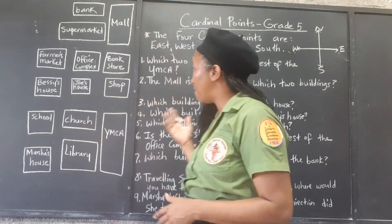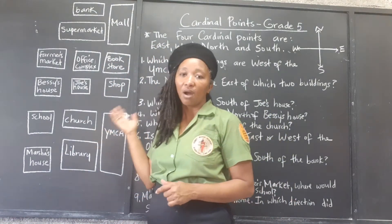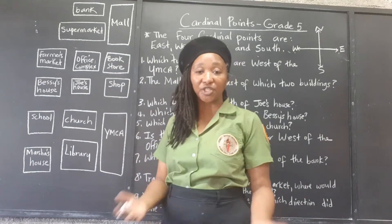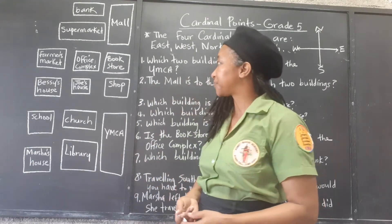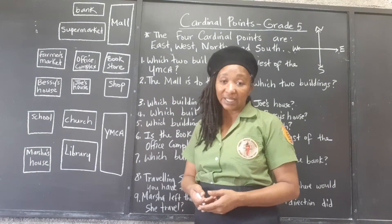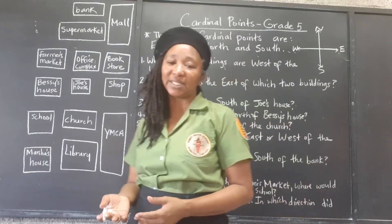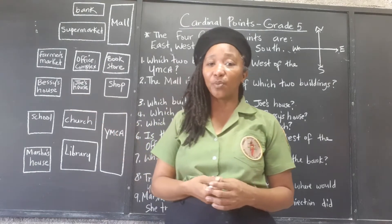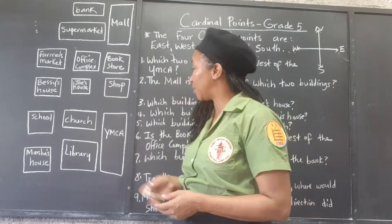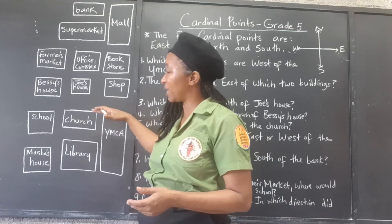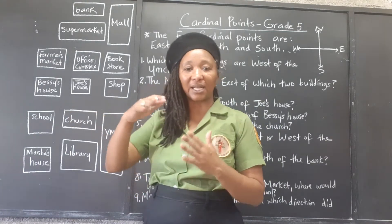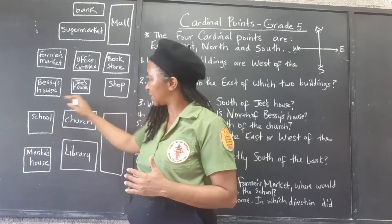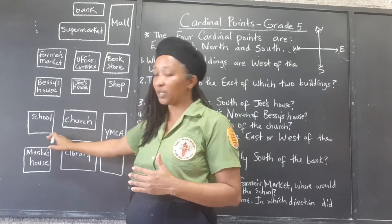So we have a map here of a location, a little village, a little community with different buildings. And like many communities, it's pretty much set up as a grid. Many communities, especially in the cities, are set up as a grid. So even if the buildings aren't exactly lined up, they're pretty much lined up, and then you have the streets coming in between.